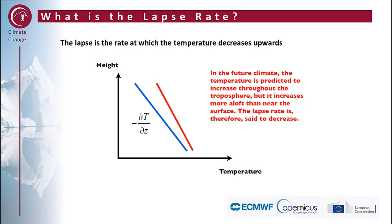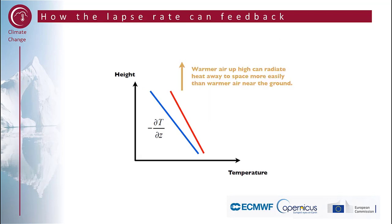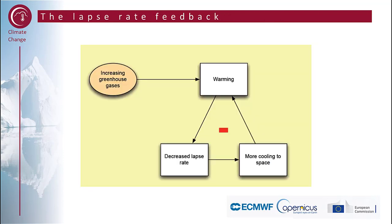The lapse rate feedback is a negative feedback. The lapse rate is the rate at which temperature decreases upwards. In the future climate, temperature is projected to increase throughout the troposphere, but it increases more higher up in the atmosphere than near the surface. The lapse rate is therefore set to decrease. As a result, the warmer air up high can radiate heat away to space more easily, producing more cooling to space. So this is a negative feedback — it reduces the warming of the atmosphere.